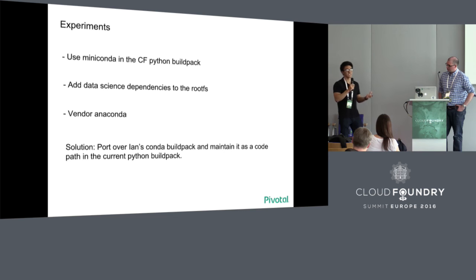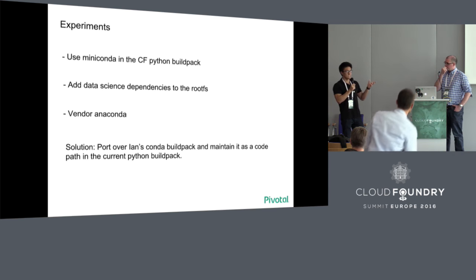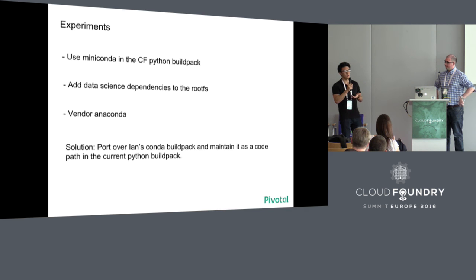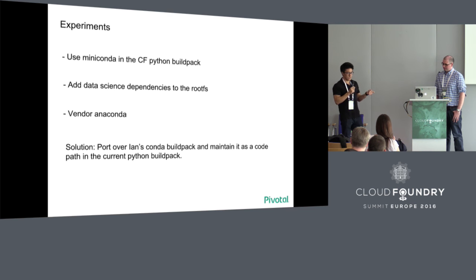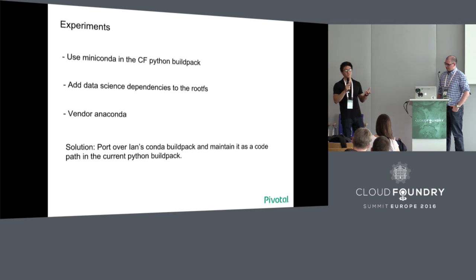The next experiment was to add all the low-level dependencies — Fortran, various C libraries, C bindings — to the rootFS, the root file system that all containers run on. This turned out to be a bad idea because these are very large dependencies, and adding them to the rootFS would add them to everybody's apps — even if you don't want them and aren't using the Python BuildPack. Then we tried vendoring Anaconda itself into the Python BuildPack, but Anaconda is very, very large, so anyone using the Python BuildPack — even with no interest in data science — would have those dependencies built in.